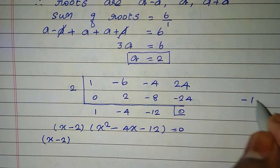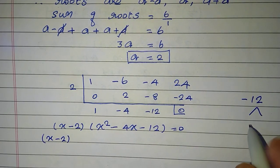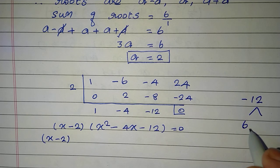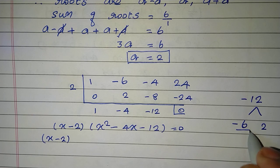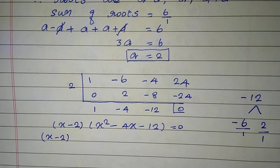If the factor is x minus 2, what is the product? Product minus 12, sum minus 4. So x minus 6 into x plus 2 equal to 0.